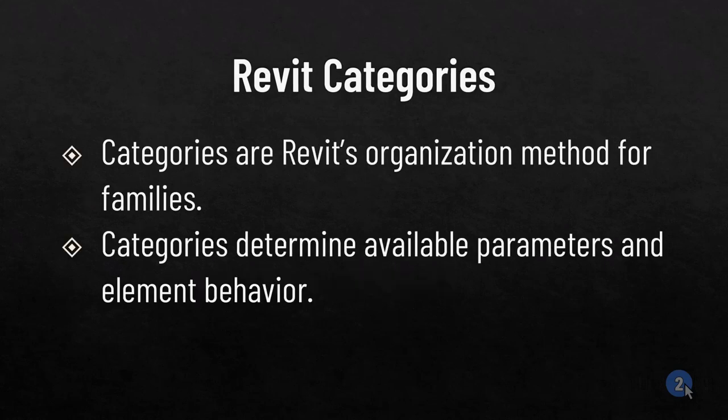Categories are Revit's main organizational structure for families. Those are high-level groupings of elements, and they are intuitive. We have things like walls, windows, doors, ducts, pipes, structural framing, structural columns. So if you went to a construction site and started pointing out individual objects, you would probably be calling out the category. Categories also determine the available parameters and how the elements behave — the category is telling Revit what this object is and how it's going to behave.